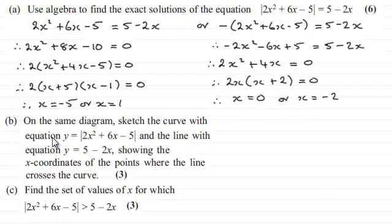Now for this part, part B, we've got to, on the same diagram, sketch the curve with equation y equals the mod of 2x² + 6x - 5 and the line with equation y equals 5 - 2x, showing the x-coordinates of the points where the line crosses the curve for 3 marks.